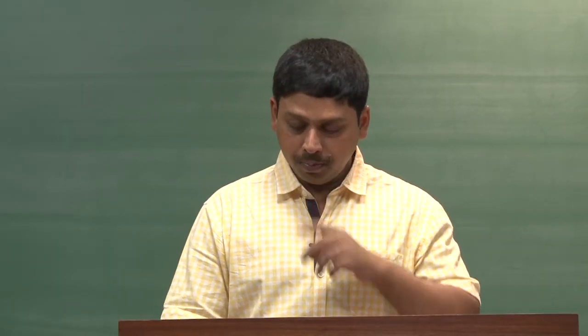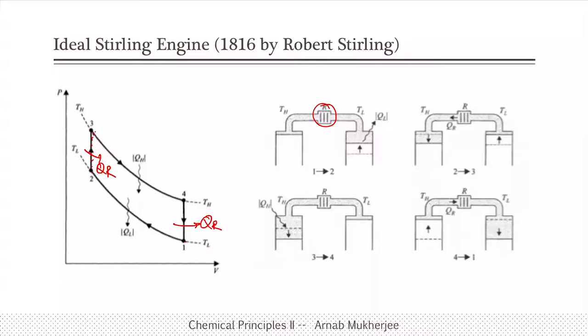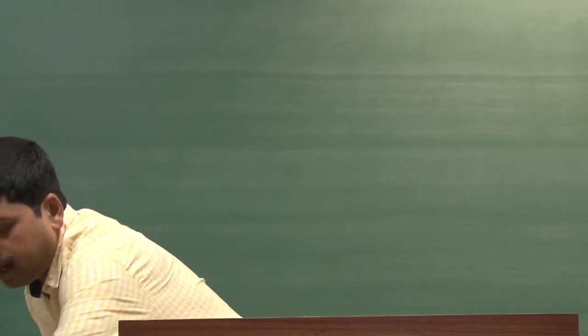Now we are going to show a realistic Stirling engine model. Unlike the two-piston version discussed, this one has only one piston, which is the typical Stirling engine model that is sold commercially. We have one with us and we are going to show it, but first I will explain it with the help of a picture.